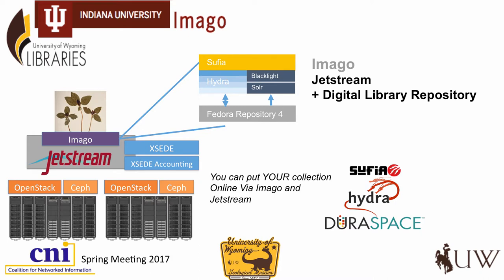Part of how UW is hoping to be involved with this is by running Imago on a Jetstream allocation or an XSEED allocation. This is really meant for institutions that don't have as much technical capacity and support as a place like IU does. Wyoming is pretty small — we do have an HPC group that works with XSEED, but we don't have a lot of development capabilities. So we're hoping to get this running on Jetstream, kick the tires with it, and hopefully offer this to the broader biodiversity community and other collections and institutions that have these same problems.